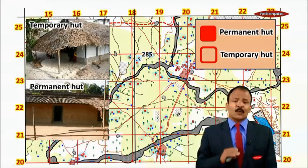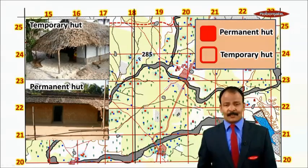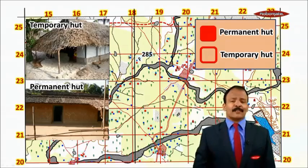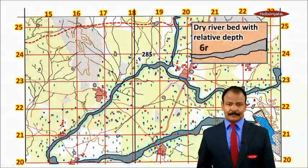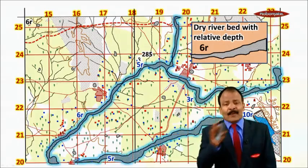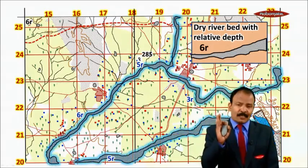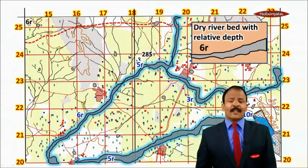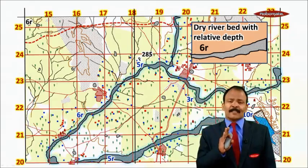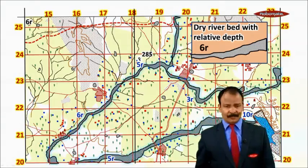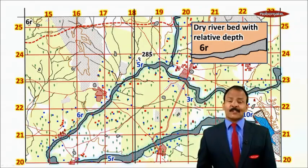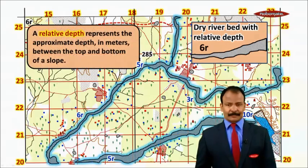There are two types of huts: permanent huts and temporary huts. Mostly permanent huts are seen, though in some places temporary huts also appear. Coming to the river bed — what we see here is a dry river bed. The reason is that this is Rajasthan where rainfall is very less and seasonal, so throughout the year it remains dry except in rainy season.